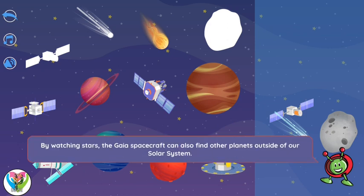By watching stars, the Gaia spacecraft can also find other planets outside of our solar system.